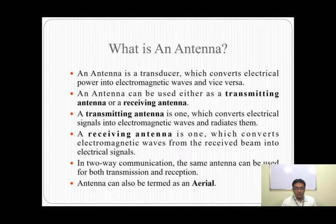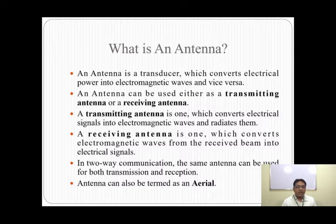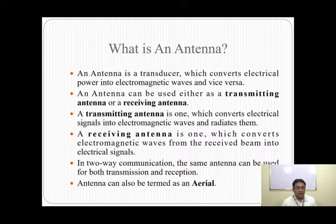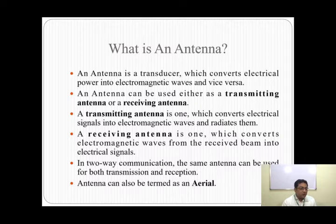So what is an antenna? Here is the proper definition. An antenna is a transducer which converts electrical power into electromagnetic waves and vice versa. An antenna can be either a transmitting antenna or a receiving antenna. A transmitting antenna is one which converts electrical signals into electromagnetic waves and radiates them, whereas the receiving antenna is one which converts electromagnetic waves into electrical signals.